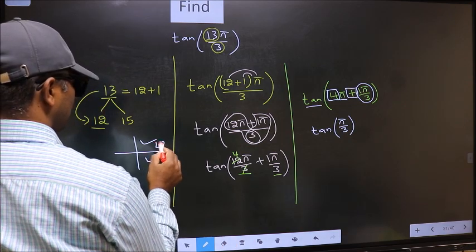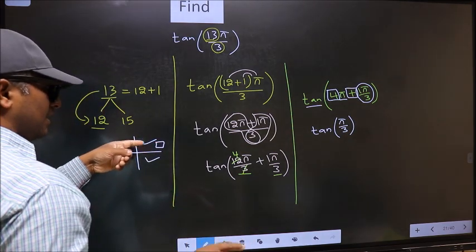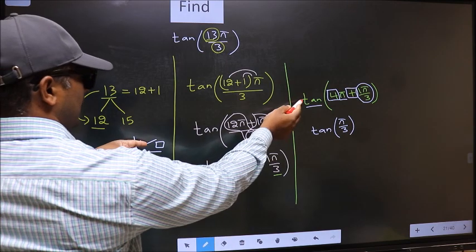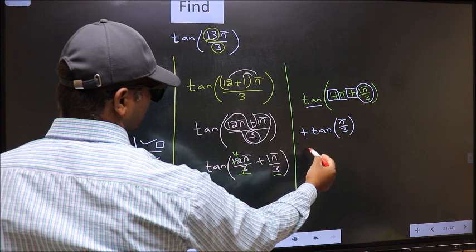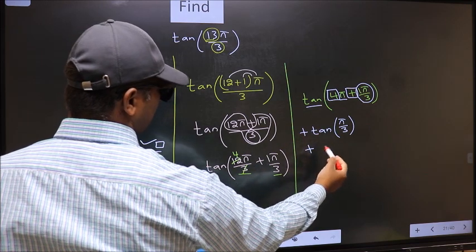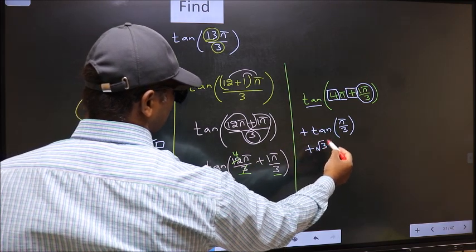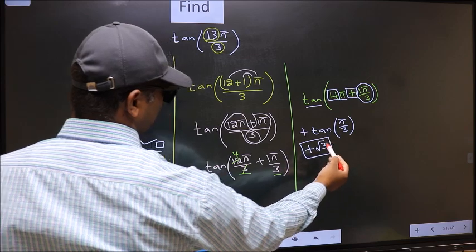And in the first quadrant, tan is positive, so we should put plus. Plus tan(π/3) is √3. This is our answer.